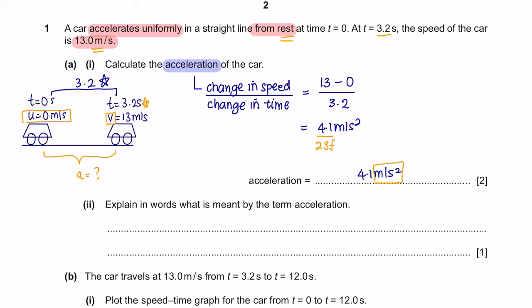Part 2: explain in words what is meant by the term acceleration. The definition of acceleration can be obtained from its formula — it is the change in speed, or increase in velocity, per unit time.